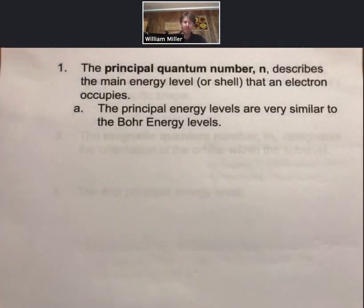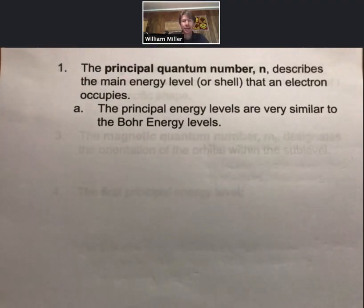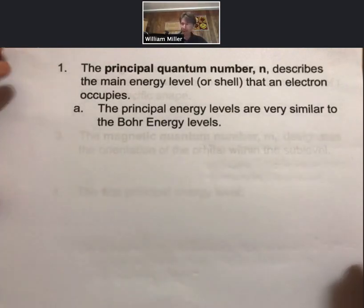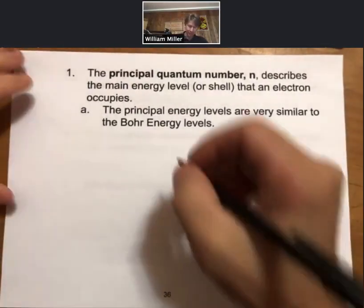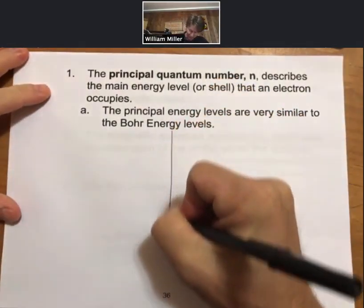Now the first quantum number is the principal quantum number, that is called n, and it describes the main energy level or shell that an electron occupies. And the principal energy levels are similar to the Bohr energy levels. And what I'm going to do is, I'm going to zoom out a little bit here, make sure I can see my whole page. And I'm going to divide my page in half here, approximately.